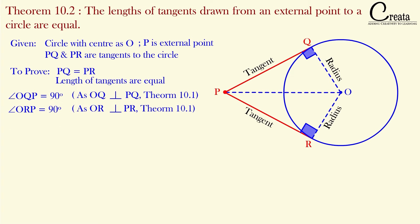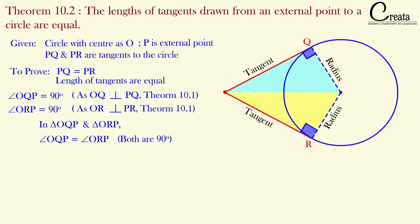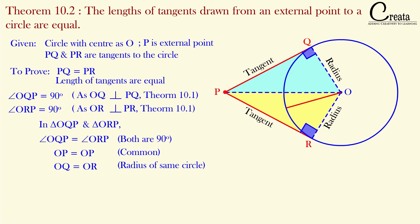Now let's compare triangle OQP and triangle ORP. Angle Q and angle R are both equal to 90 degrees, so both of these triangles are right-angle triangles. Further, OP is common in both triangles, so OP is equal to OP — common in both triangles. Also, OQ and OR are both radii of this circle, so OQ is equal to OR.